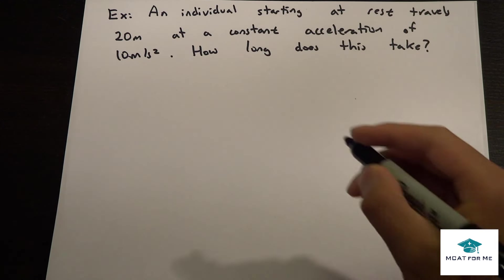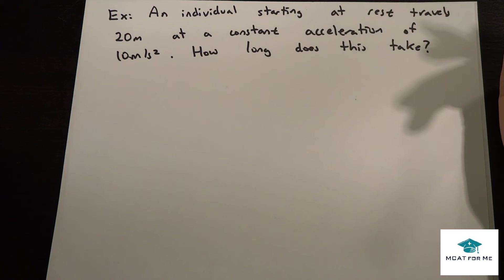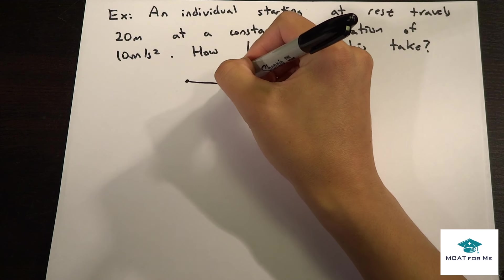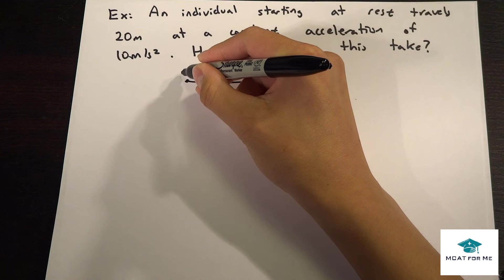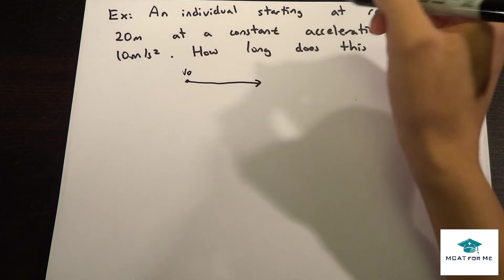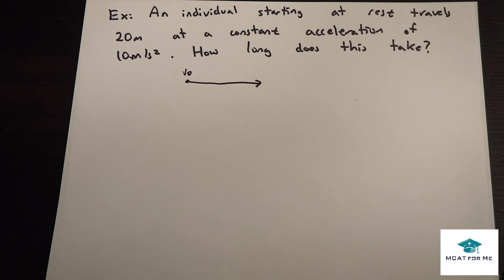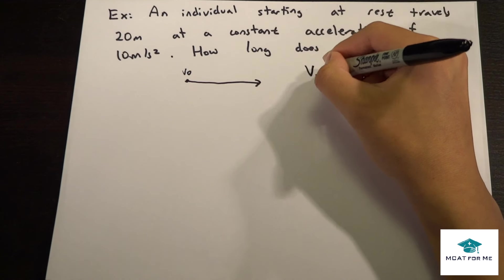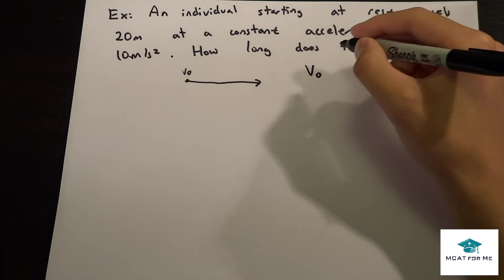How long does this take? So the first thing we want to do for these types of questions, we could draw a picture. It's not going to help us too much. So he starts from rest. So he starts from the V0 at rest. And he goes for a certain distance. How long does it take? So that's not really important to us. What we need to know are the variables involved.